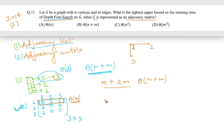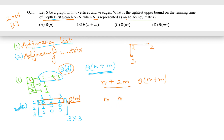But in adjacency matrix representation, for each node we cannot find neighbors in theta(d) time. Instead, we have to scan the entire row, which takes theta(n) time. We do this for each and every node, so overall it is going to be theta(n squared) time.